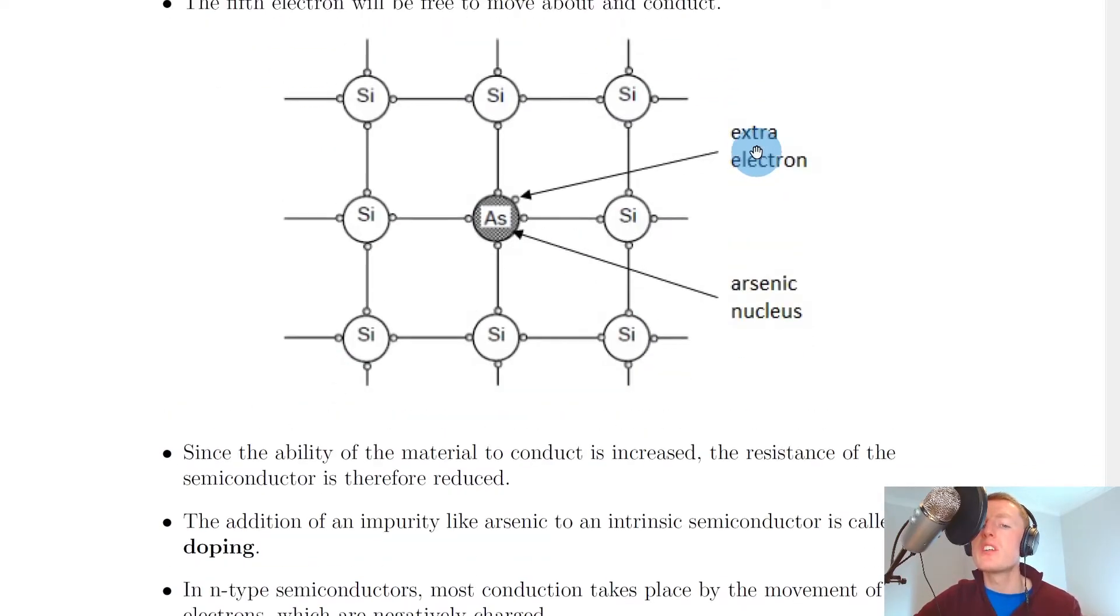What we've actually done is we've introduced an impurity atom which is arsenic, which has an extra electron because four of the outer electrons for arsenic bond covalently with the silicon atoms adjacent to it, but there's that extra leftover electron which can move about and increase the conductivity of the material.